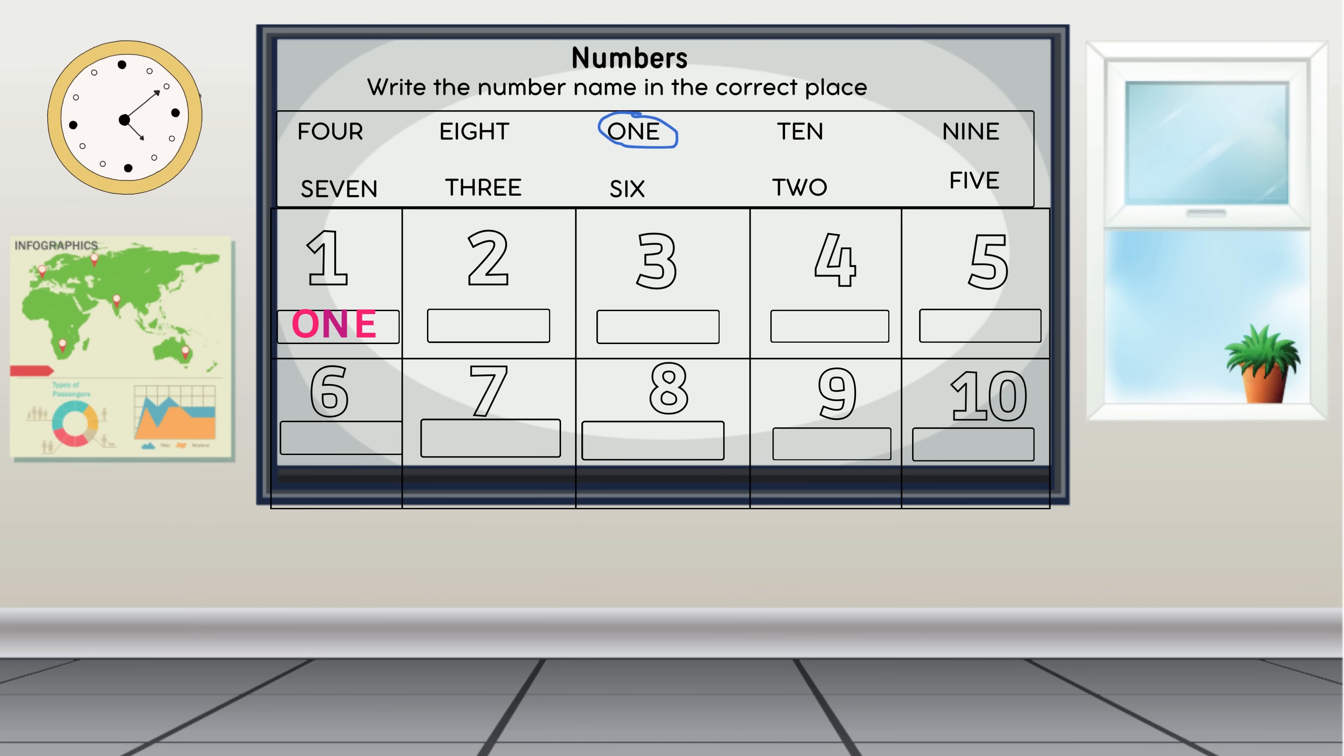Great work, we've just learned the number name for one. Let's proceed to the next number two. Let's find the number name for two in the word bank. I spy with my little eyes the word that ends in O. There it is, two. Let's circle two. Let's write two together: T-W-O.